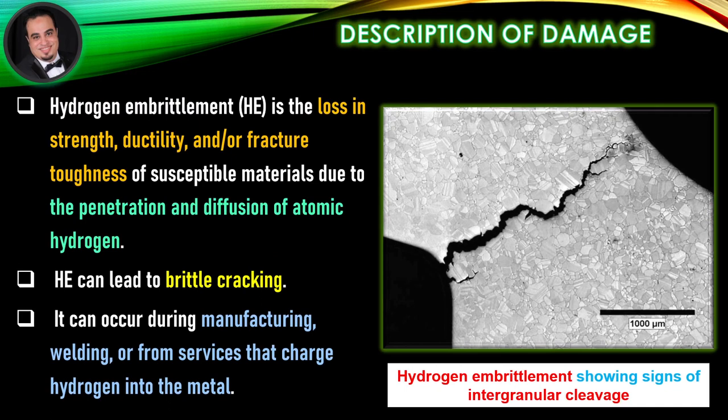Description of Damage: Hydrogen embrittlement is the loss in strength, ductility, and/or fracture toughness of susceptible materials due to the penetration and diffusion of atomic hydrogen. HE can lead to brittle cracking. It can occur during manufacturing, welding, or from services that charge hydrogen into the metal.